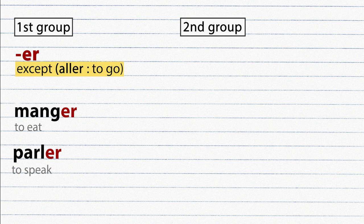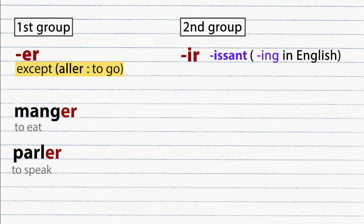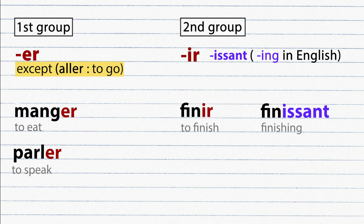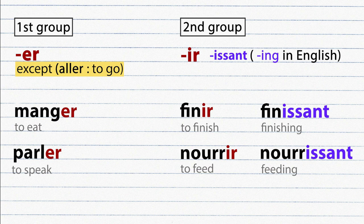Second group, these verbs in infinitive form end in IR and whose present participle ends with -issant, equivalent to -ing in English. Example: finir, finissant. Nourrir, nourrissant.